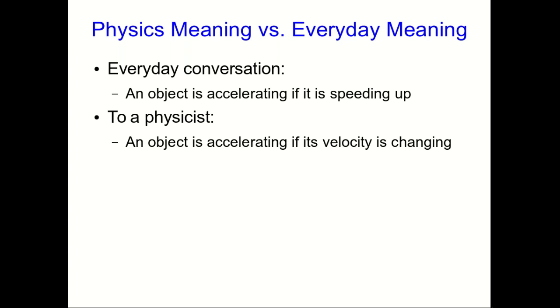To a physicist, an object is accelerating any time its velocity is changing in any way. There are several ways that velocity can change. One is that the object can be speeding up, and so this is the case where the physicist's definition agrees with the everyday definition.